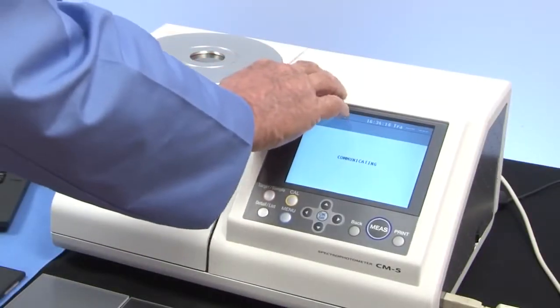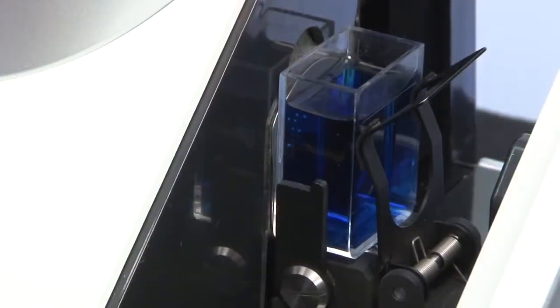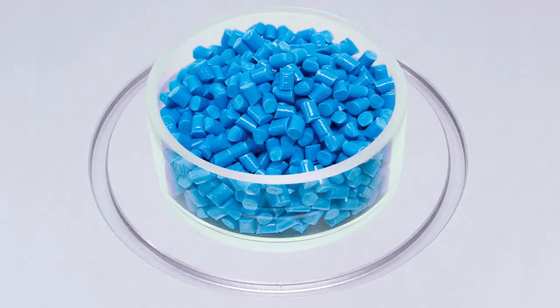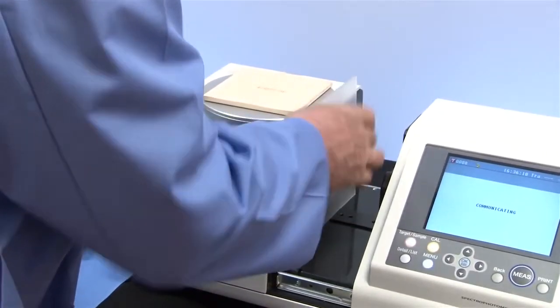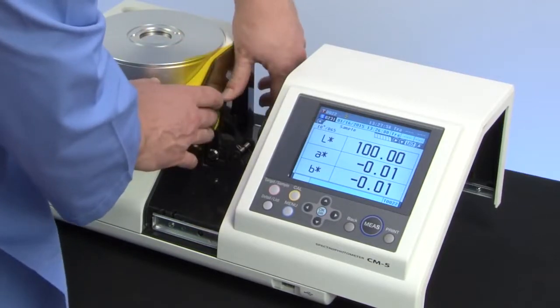The CM5 measures a variety of samples with different material characteristics such as liquids, powders, paste, and granules, as well as the haze of transparent films and glass. The transmittance chamber can hold large sheets up to 60 millimeters thick.